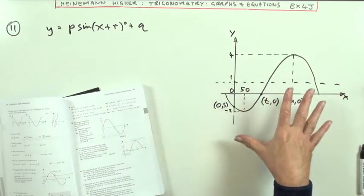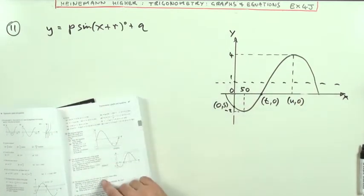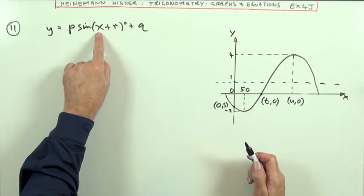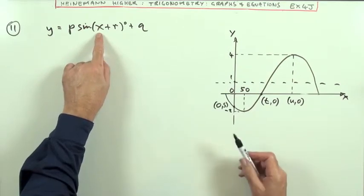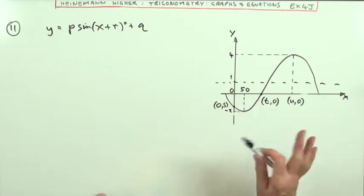There's this graph here with some information in it. This is the form of the graph, and it wants to know the values of P, Q, R, and U. Well, the first thing is there's nothing in front of X, which means it's got a normal wavelength of 360. So the whole width is 360. That'll be a help.